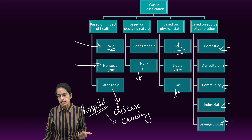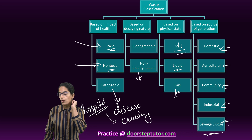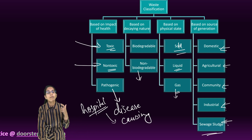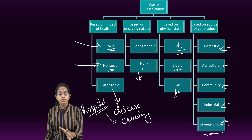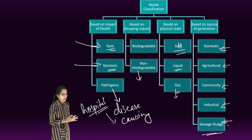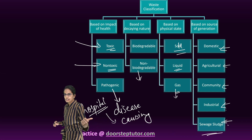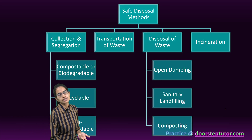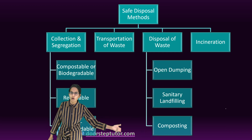The next is sewage sludge, which is again an important component. Besides this, exhaust from automobiles is another important source of waste and pollution. To quickly summarize, there are four bases of classification: based on health, based on decaying nature, based on physical state — solid, liquid, and gas — and based on the source of generation.